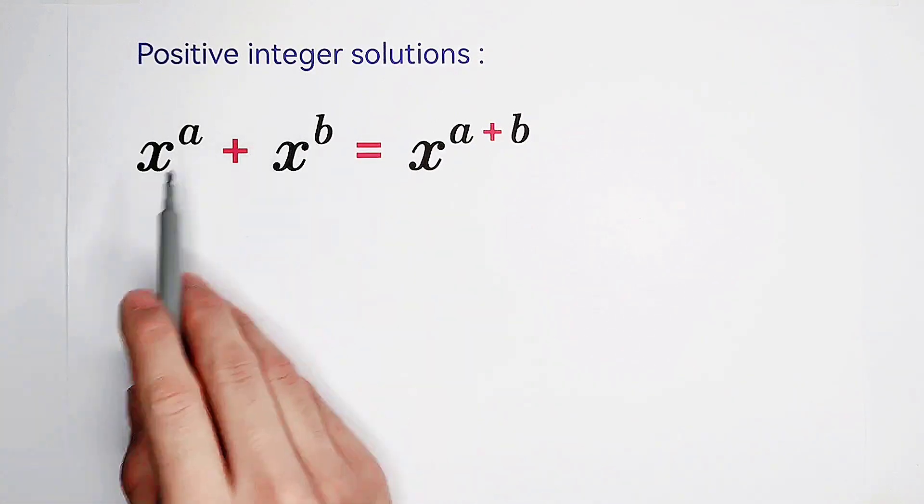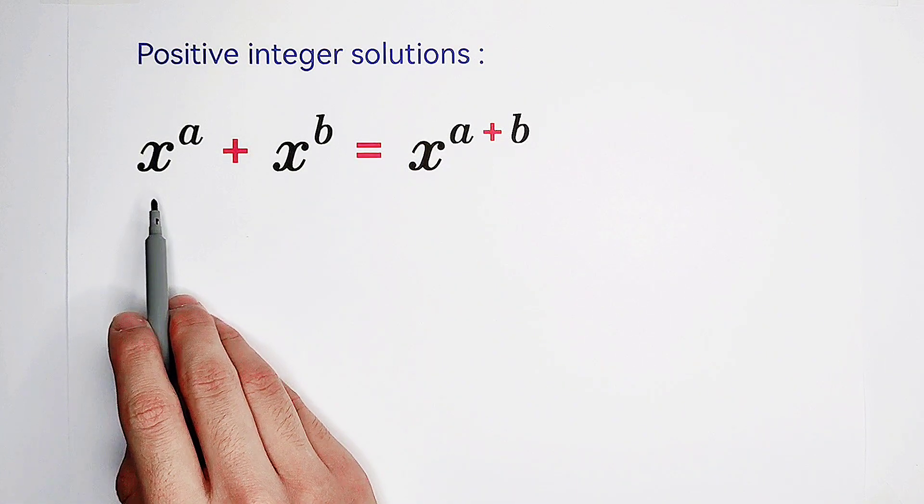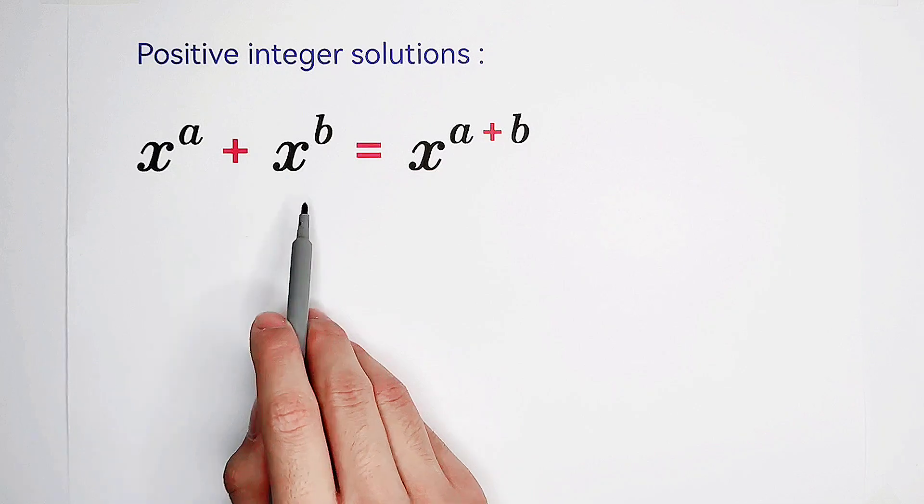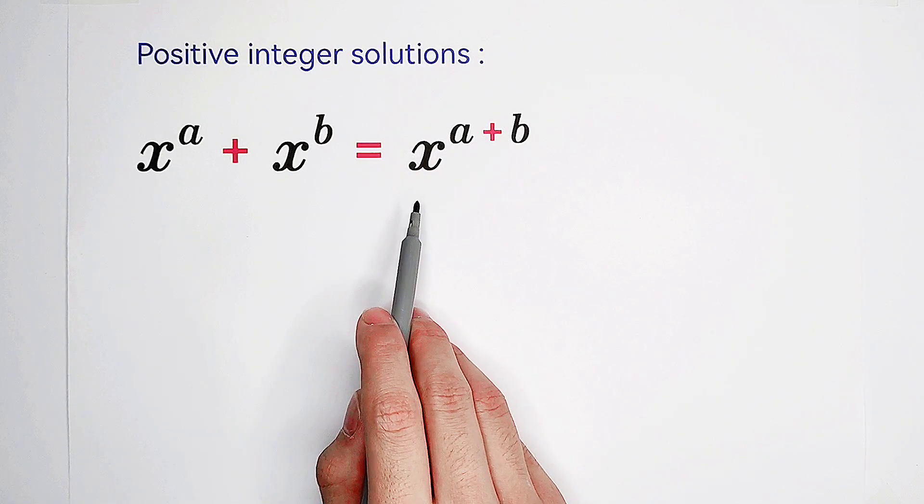Find all positive integers a, b, and x satisfying this equation: x to the power of a plus x to the power of b equals x to the power of a plus b.